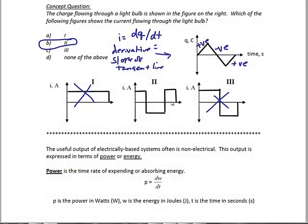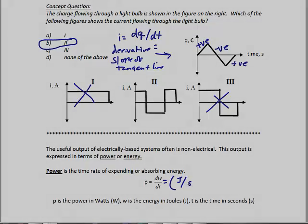The next definition is power. The useful output of electrically based systems often is non-electrical, such as heat or some kind of mechanical system like a fan. This output is expressed in terms of power or energy. Power is the time rate of expending or absorbing energy. So P, which is in watts, is equal to dw/dt, where dw is energy and t is time in seconds. Watts is the same as joules per second.